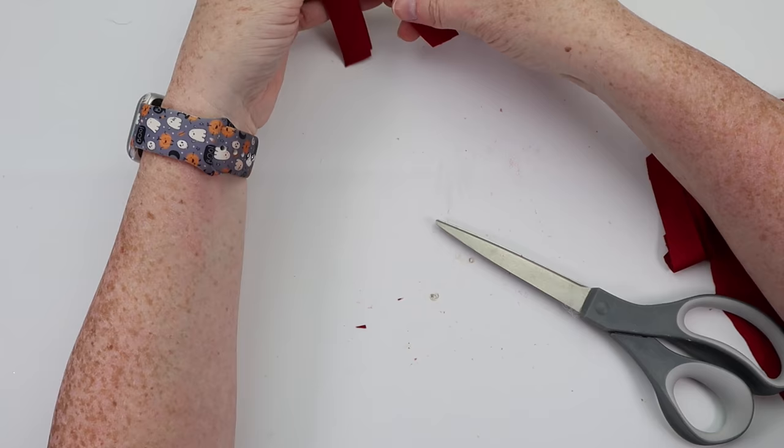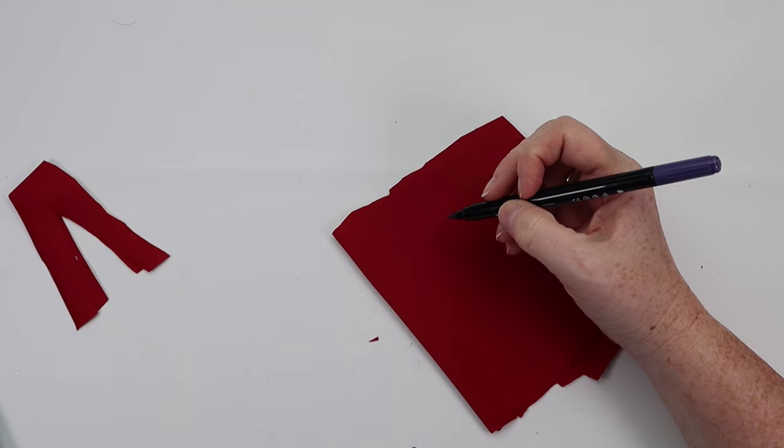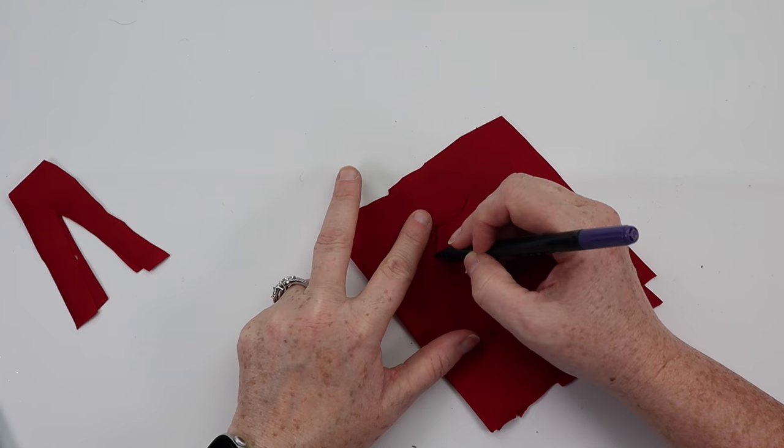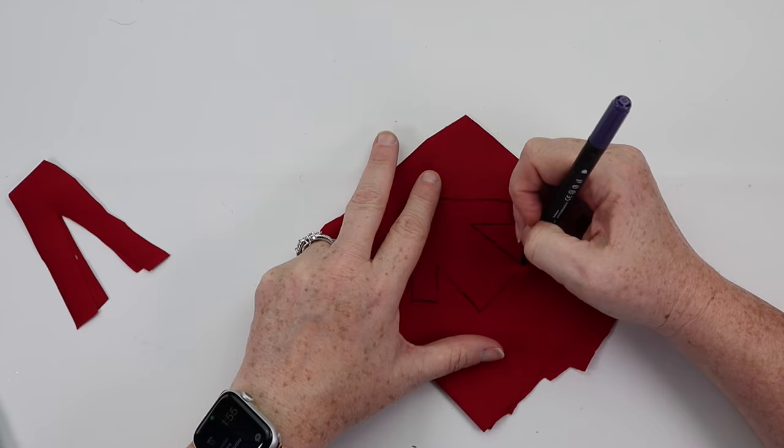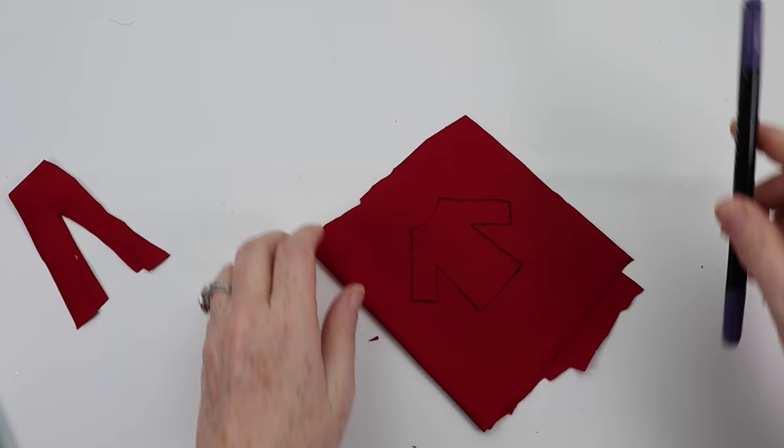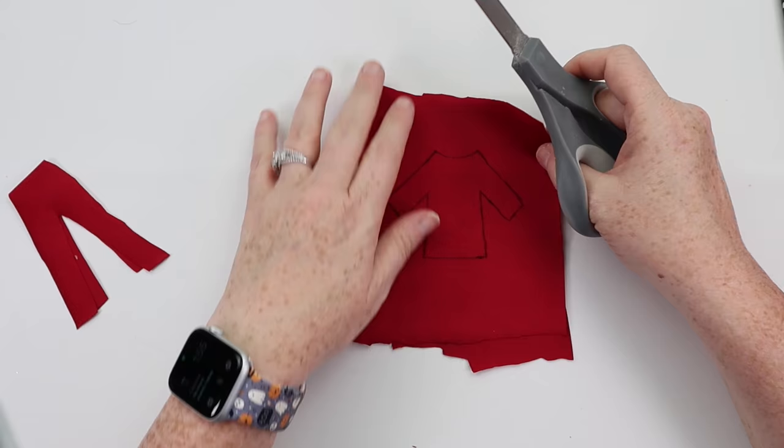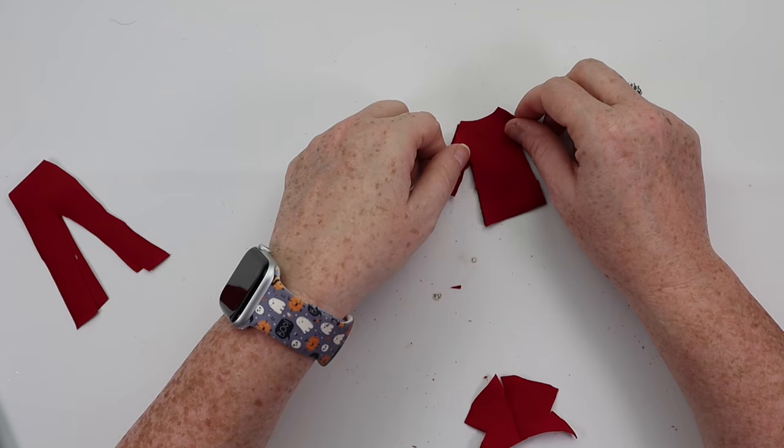I grabbed the fabric and cut the pants out, and then for the jacket I grabbed a fabric marker and I went ahead and just traced out a long sleeve t-shirt, you could call it, or a jacket. I cut two pieces of fabric that look like that, and then for the front part of the jacket I just cut that t-shirt or jacket piece in half.